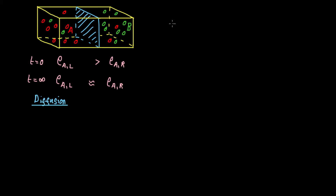So we want to know, at time t equals zero, what is the flux? What rate of species A is moving from left to right? Let's denote the flux through this blue surface as J_A. This will have units of kilograms per square meter because it's passing through this area, and we want the rate, so it's per second as well.